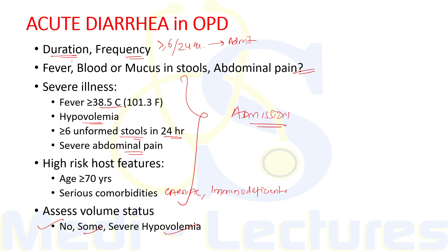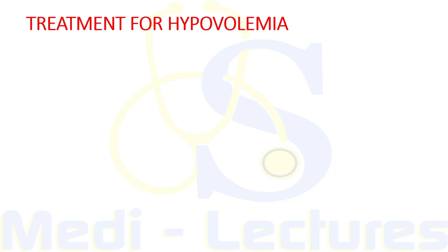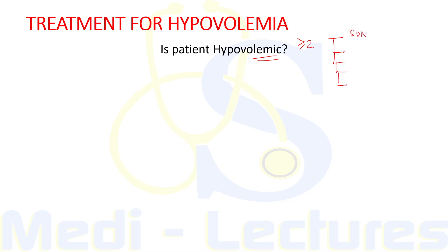Diarrhea can lead to dehydration which can be life threatening, so we will first focus on treatment of hypovolemia irrespective of the etiology. Once the patient is vitally stable, we can proceed with making the diagnosis and antimicrobial treatment. In the OPD we check blood pressure, pulse rate, and perform a general examination. The criteria for hypovolemia is the presence of two or more of the following signs: sunken eyes, absence of tears, dry mouth and tongue, increased thirst, and decreased skin turgor.